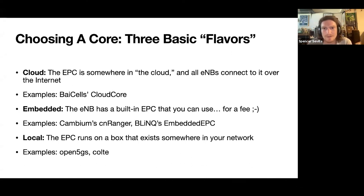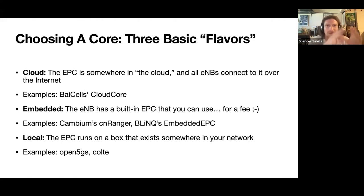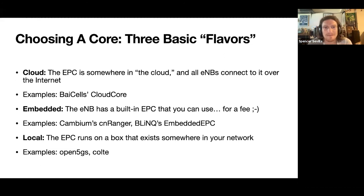CN Ranger is an example of an embedded core. Blink also sells an embedded EPC as an option — you buy a license and it turns itself on. Or you can take a core network software, run it on a server or a box somewhere, put it in your network, and point your eNodeBs at that. That's Open5GS, Colty, or it used to be OAI.